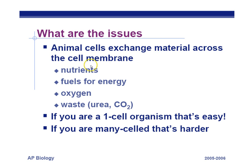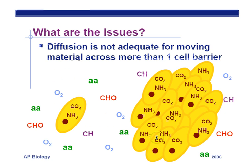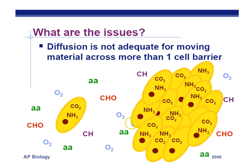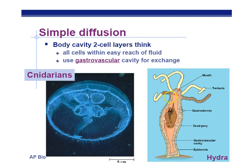Animal cells exchange materials across the cell membrane — taking in nutrients, glucose, and oxygen, and removing waste like urea and carbon dioxide. For single-celled organisms this is no problem, but for multicellular animals it's harder. Diffusion is not adequate for moving things over large distances; it only works effectively across about one or two cell layers. Only a few animals rely on simple diffusion, like Hydra and other cnidarians, which have only about two cell layers between their gastrovascular cavity and their cells.